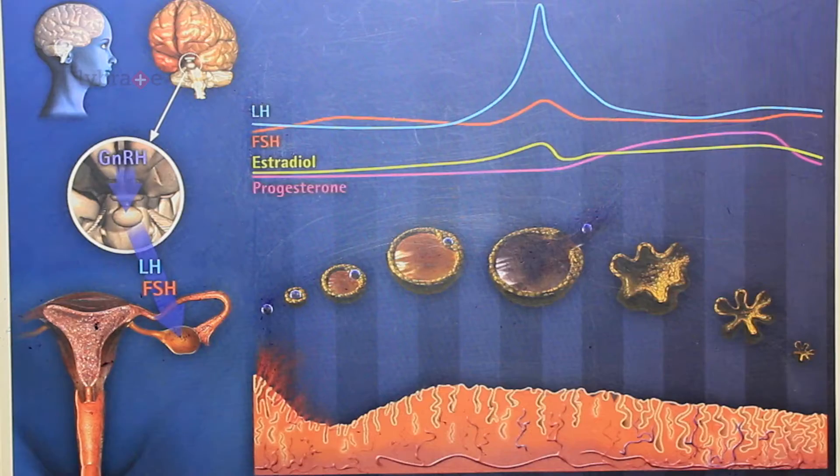We will start with the basics to understand where the problems arise. This is a normal menstrual cycle of the female. There are certain things you need to know — where there is the uterus. Normally, with the onset of the period, when the menstrual cycle starts in the female, the ovary has a lot of oocytes — immature oocytes which are always present in the ovary.